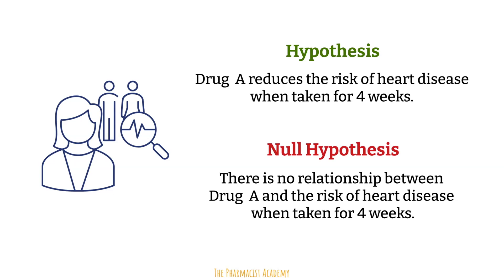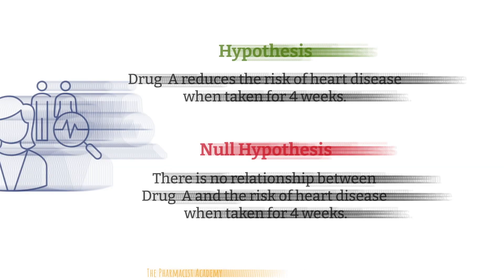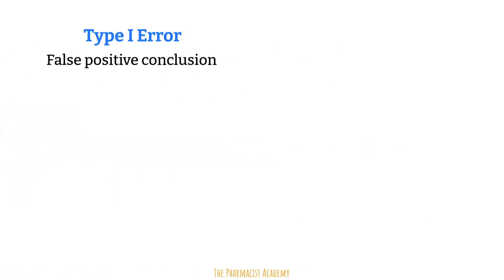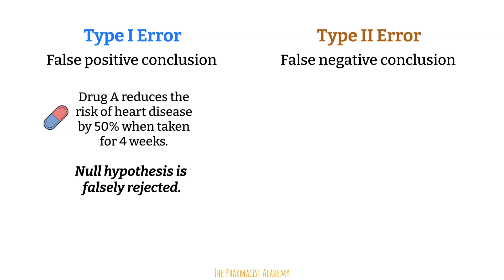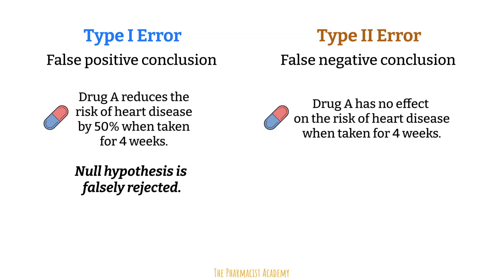Researchers can make mistakes with their conclusions. A type 1 error is when the researcher makes a false positive conclusion — for example, concluding that drug A reduces the risk of heart disease by 50%. We are rejecting the null hypothesis when in reality it was actually correct. A type 2 error is when the researcher makes a false negative conclusion — for example, concluding that drug A does not reduce the risk of heart disease, accepting the null hypothesis when in reality it was false.